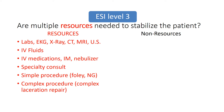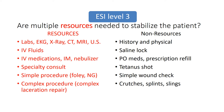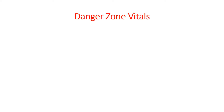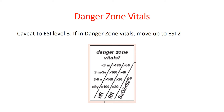Now, here are items that are considered non-resources: simple history and physical, a saline lock, PO meds or prescription refill, a tetanus shot, simple wound check, or the need for crutches, splints, or slings. If your patient doesn't need any resources but needs these non-resources, you can move on to ESI Level 4. Before moving on to Level 4, however, you have to consider the patient's vitals. If you triage them at a Level 3, take a look at their vitals. If they fall into any of these categories, you may have to consider moving them to Priority Level 2 because their condition may be worse than expected.